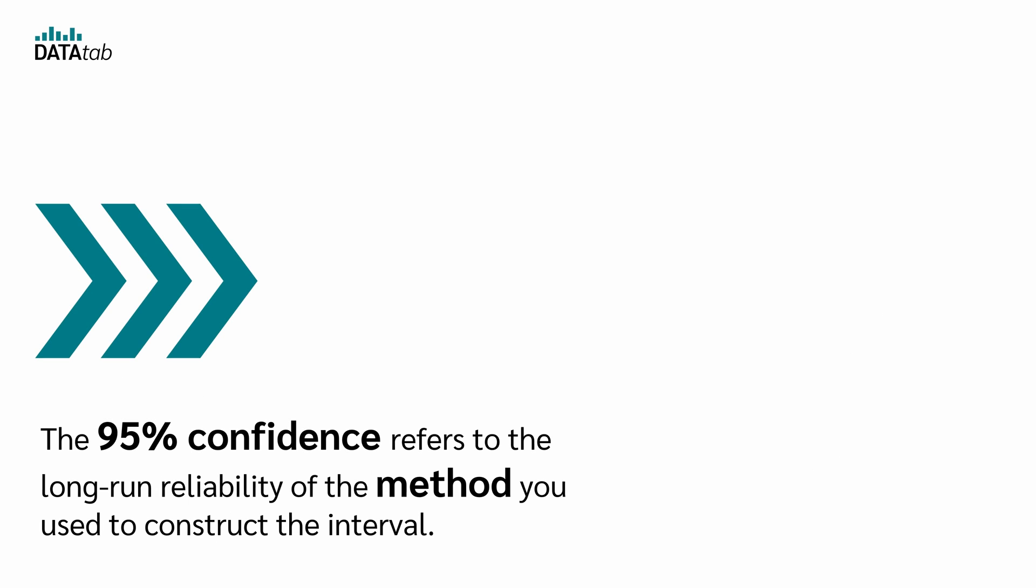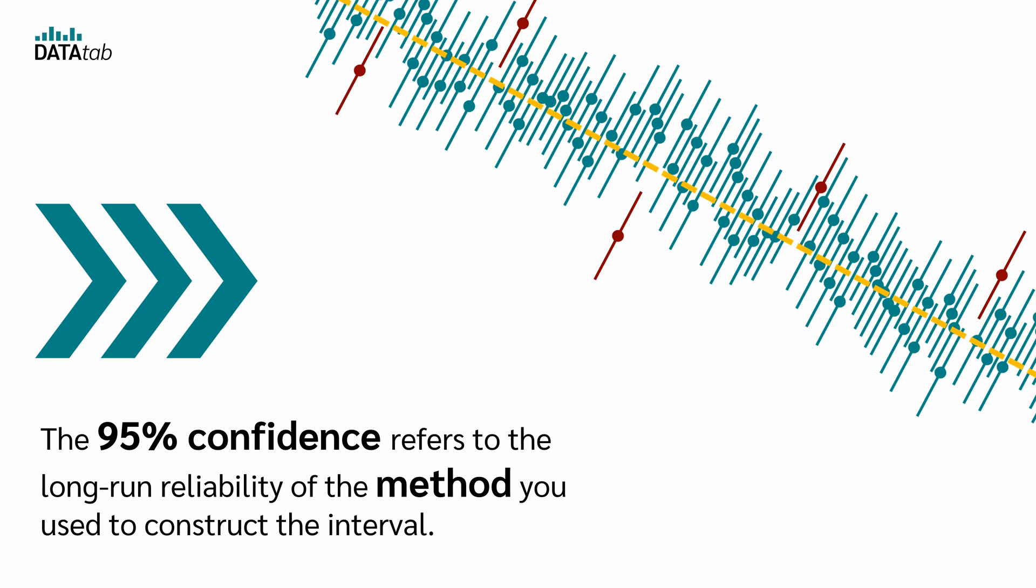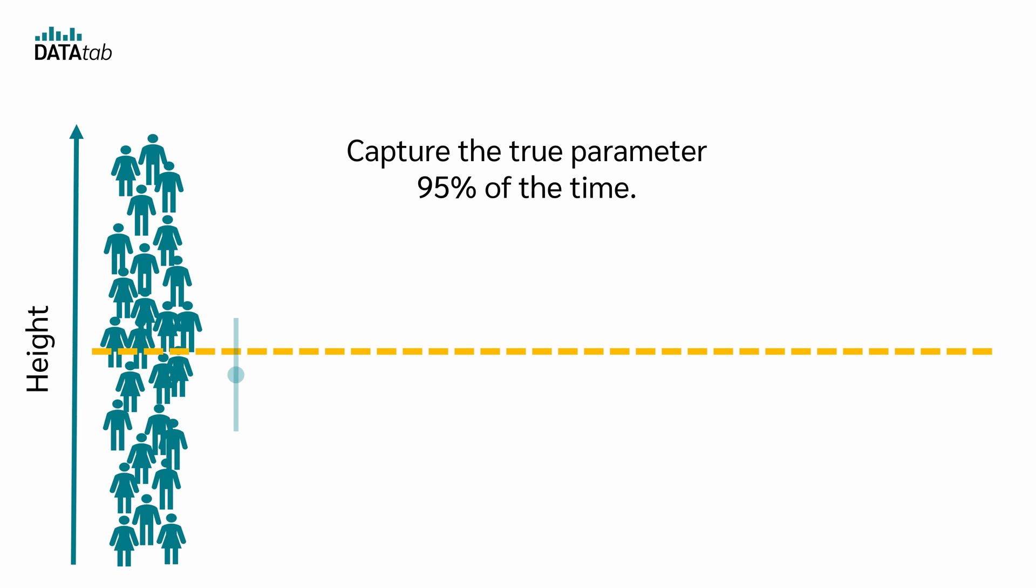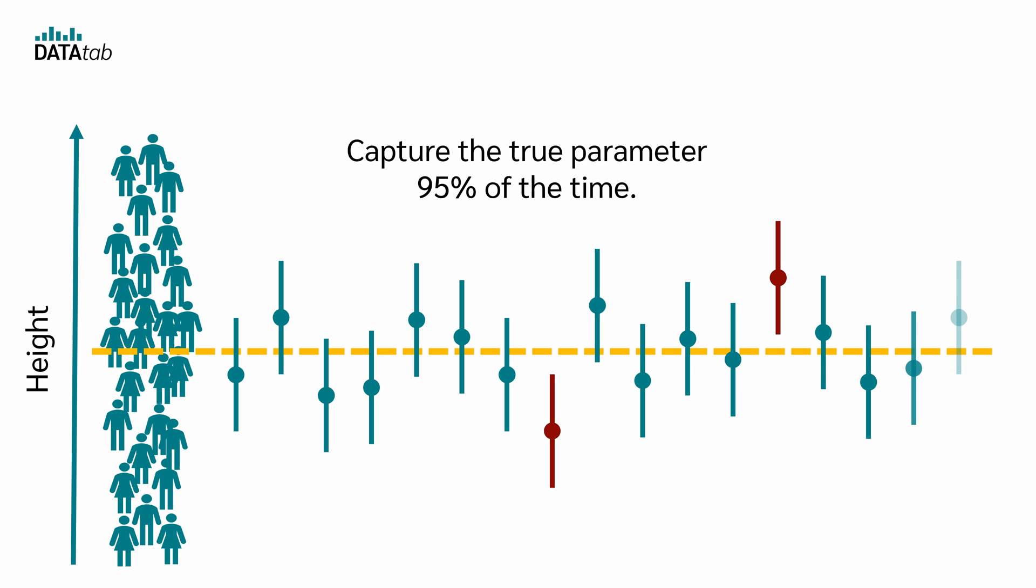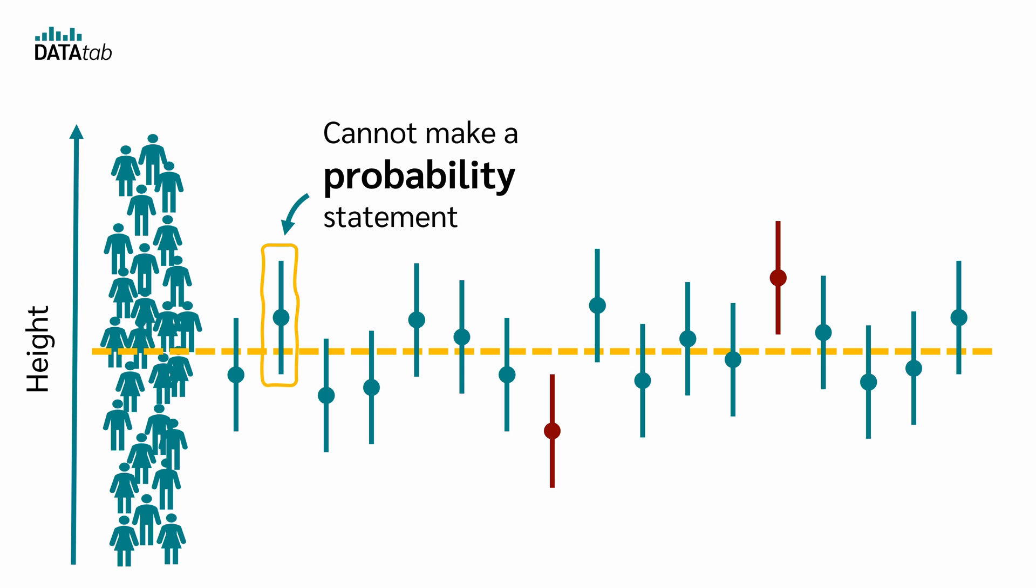The 95% confidence refers to the long-run reliability of the method you use to construct the interval. It means that if you use this method repeatedly on different samples, you expect to capture the true parameter 95% of the time. But once you've applied it and obtained a specific interval, you then cannot make a probability statement about whether this interval contains the fixed true parameter or not.